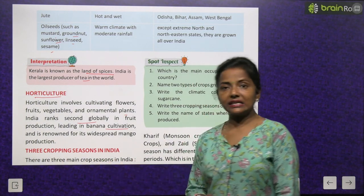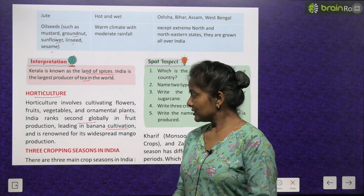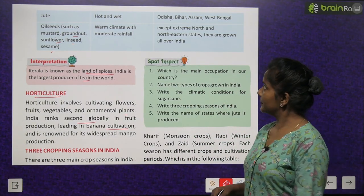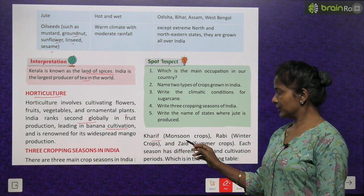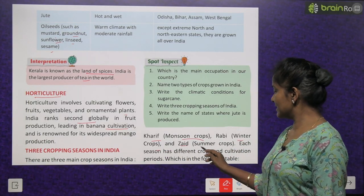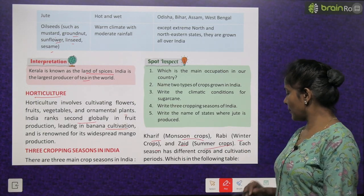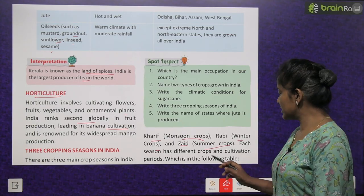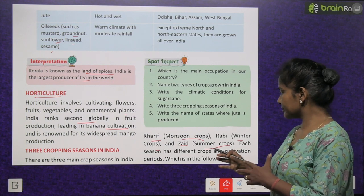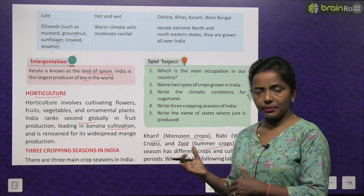There are three main cropping seasons in India: Kharif (the monsoon crops), Rabi (winter crops) and Zaid (summer crops). Each season has different crops and cultivation practices, as shown in the following table.